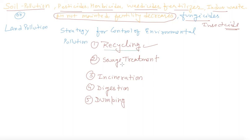The second strategy is sewage treatment. Sewage disposal can be treated by: number one, removal of solid waste; and number two, organic matter can be oxidized or decreased by applying physical and chemical processes like coagulation, filtration, and disinfection by bleaching powder.